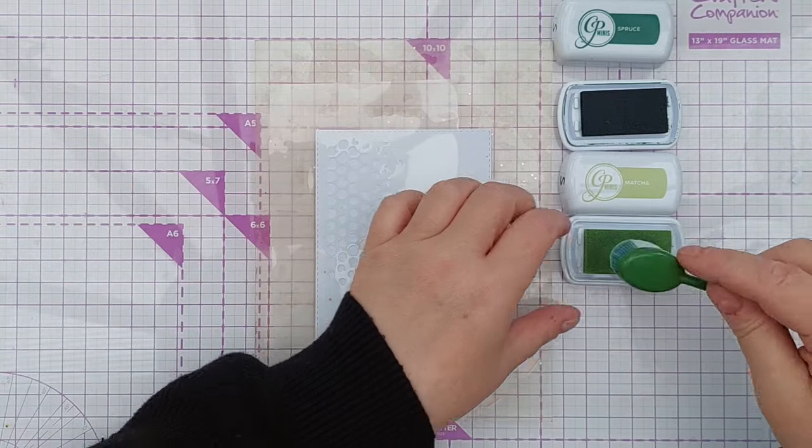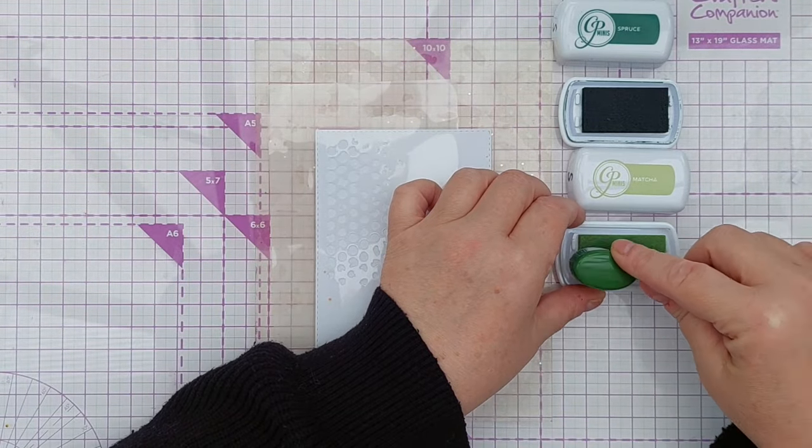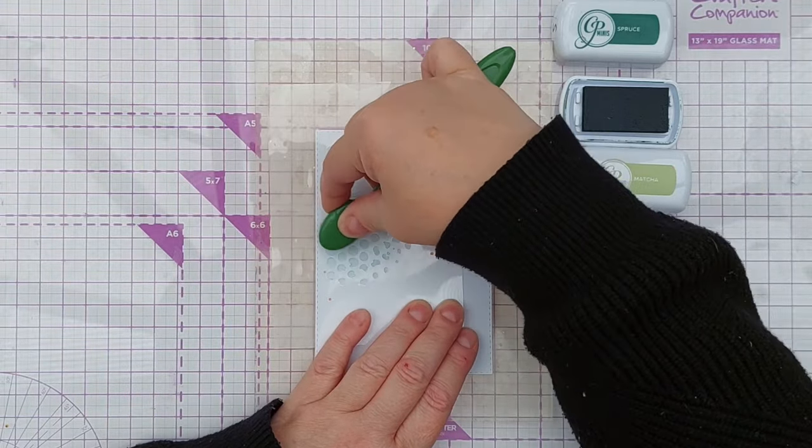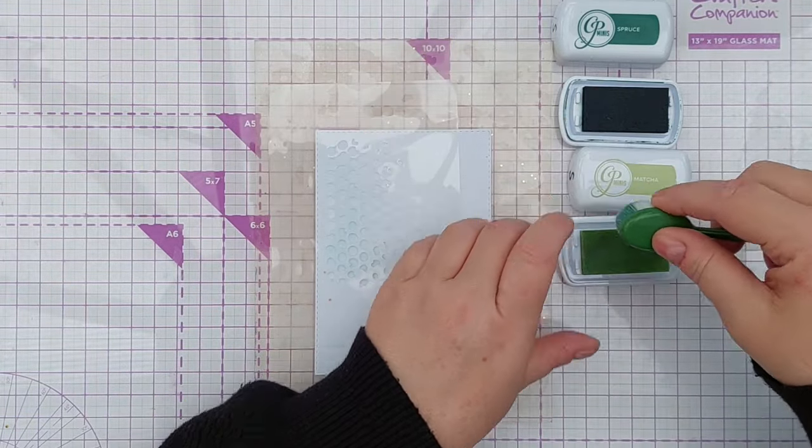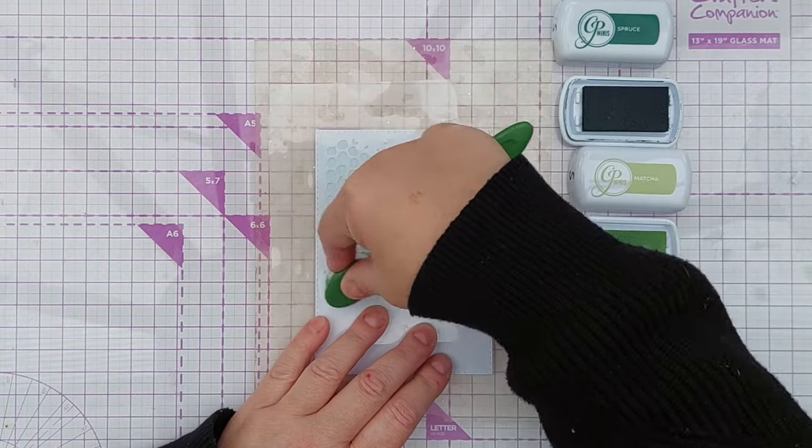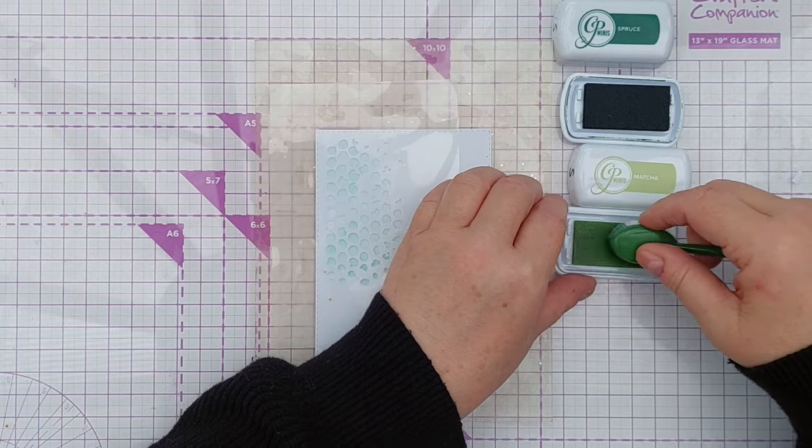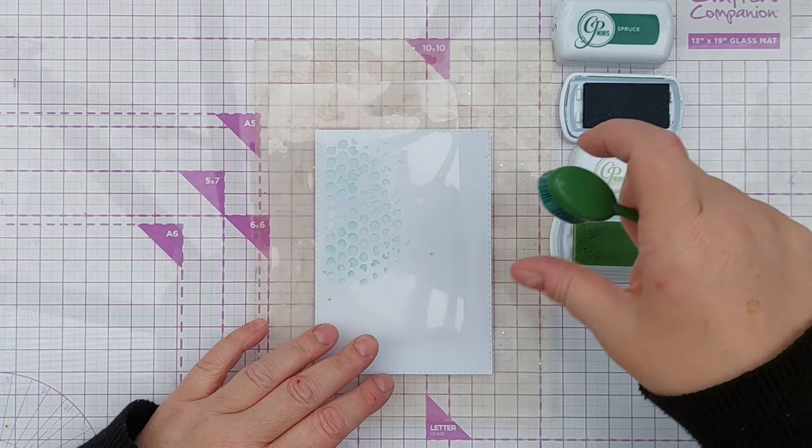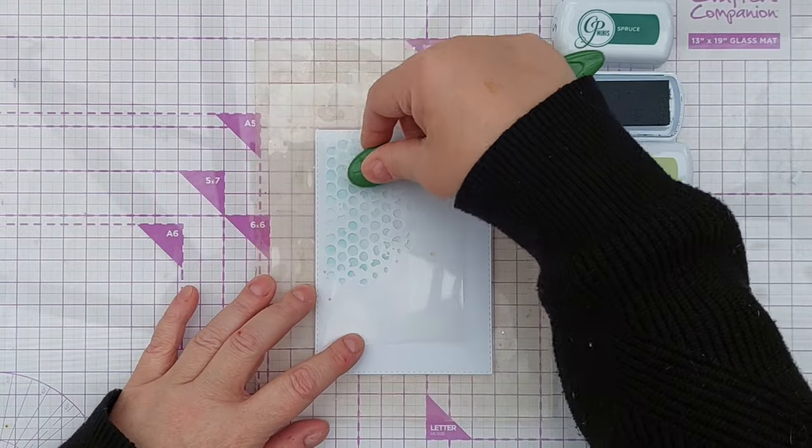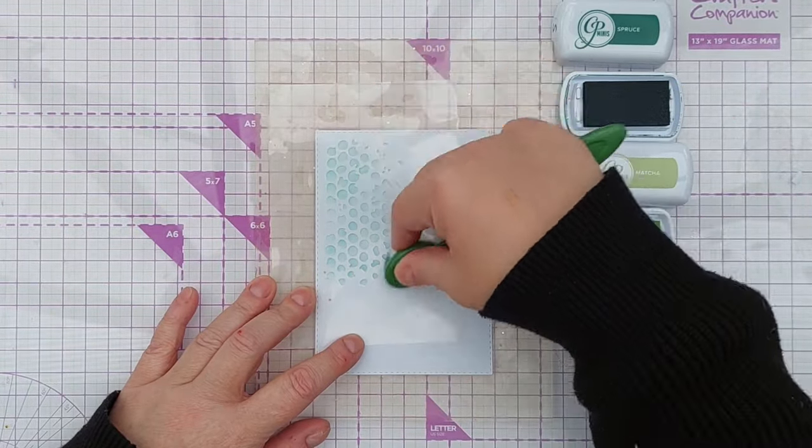My idea for this card is to blend some subtle green colour because I'm going for a foliage floral inspired design. So I'm going to blend these Catherine Pooler inks. I've got Matcha and Spruce both from the Spa collection and I'm just going to gently blend them through.